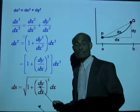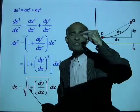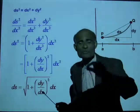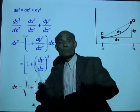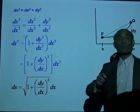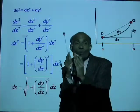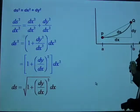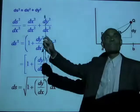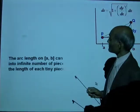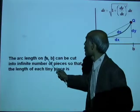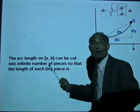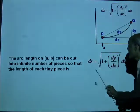This is an expression for the distance between two points on a curve when those points are very close to each other. And once you have that, to find the entire distance s, what we need to do is add all such ds's, or integrate this ds from x equal to a to x equal to b. That will give you the length of the arc. So the arc length on the interval a, b can be cut into an infinite number of such pieces that have these lengths.